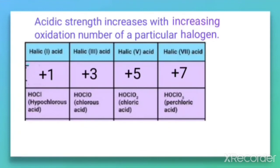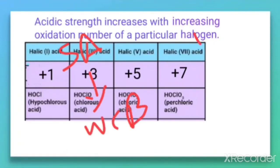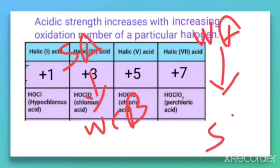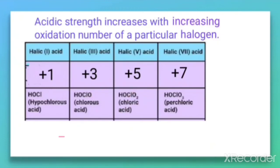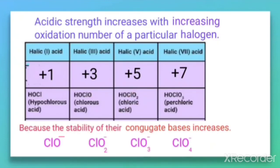This can be explained on the basis of the Brønsted-Lowry concept. According to this concept, a stronger acid gives rise to a weaker conjugate base. The conjugate bases are: ClO⁻ for hypochlorous acid, ClO₂⁻ for chlorous acid, ClO₃⁻ for chloric acid, and ClO₄⁻ for perchloric acid. To find the conjugate base, remove the H⁺ ion.